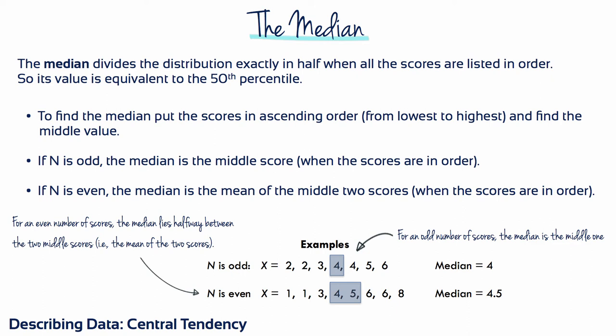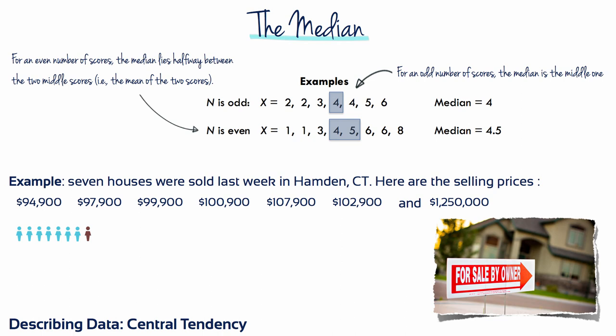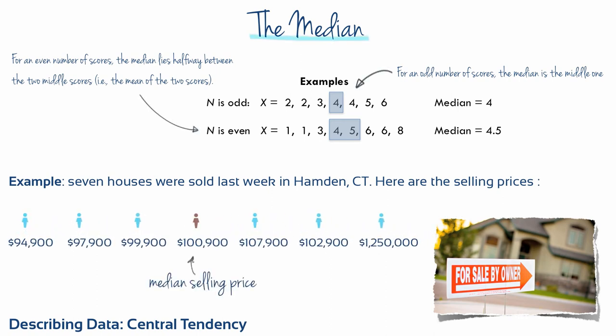If the n number is odd, the median is the middle score. If the n number is even, the median is the mean of the middle 2 scores. If we were to identify the median for this previous example, it would be $100,900. It's the middle of the 7 prices when they are arranged from lowest to highest.